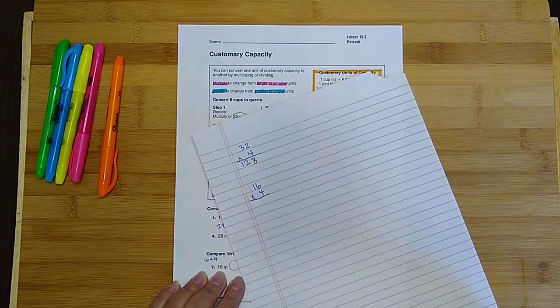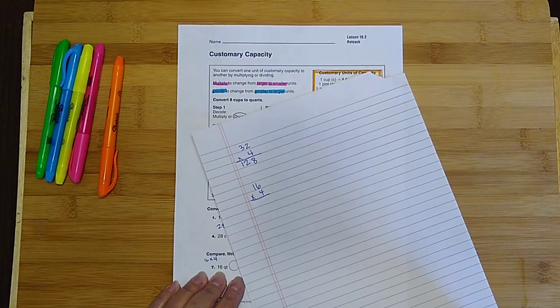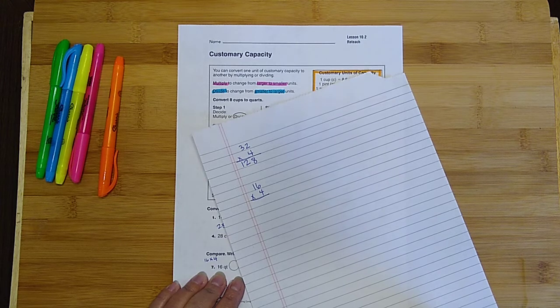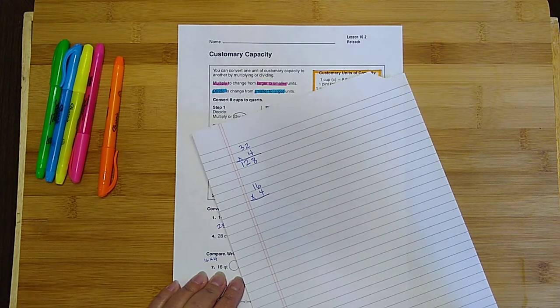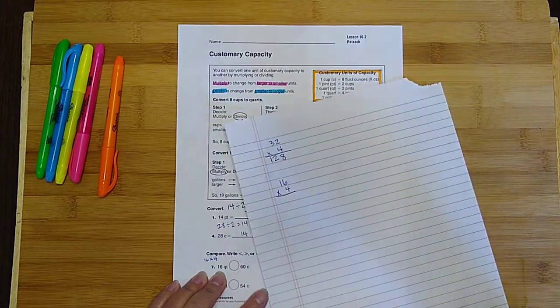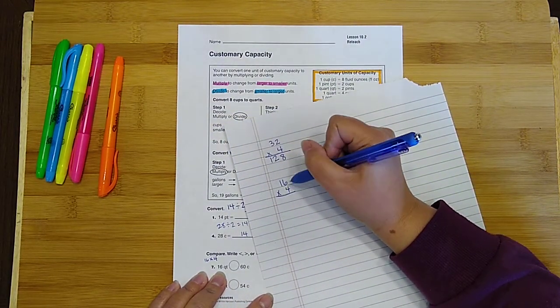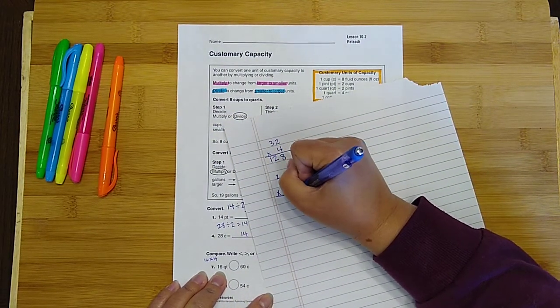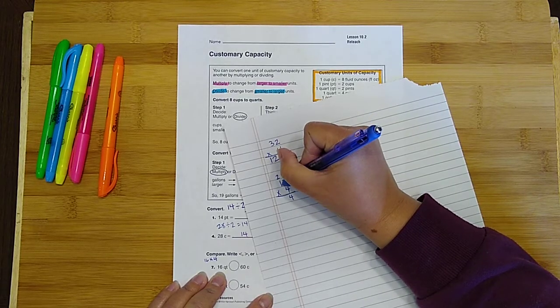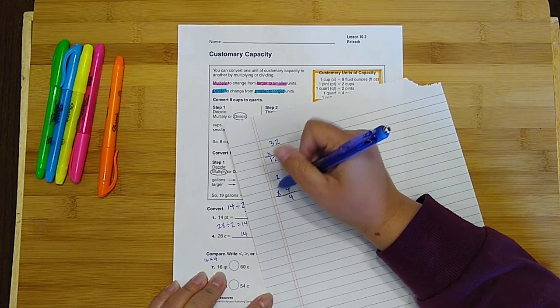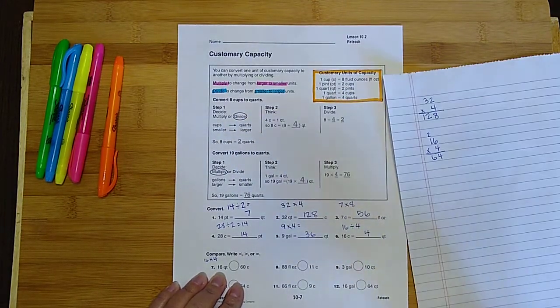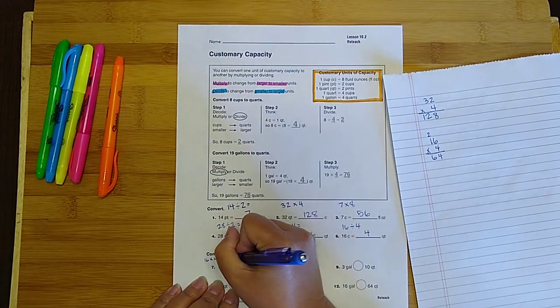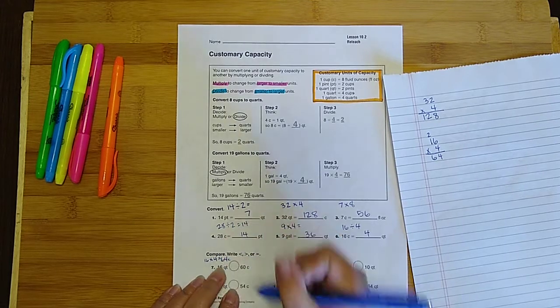Okay, you write that out on your scratch paper. Go ahead and pause the video and give it a try. All right. 4 times 6 is 24. 4 times 1 is 4, plus 2 is 6. So you should have got the answer 64. So on this side I have 64 cups.